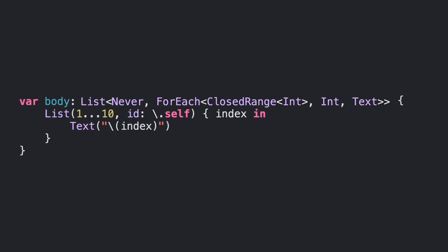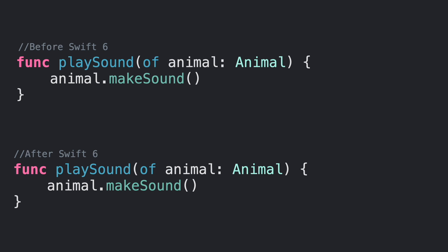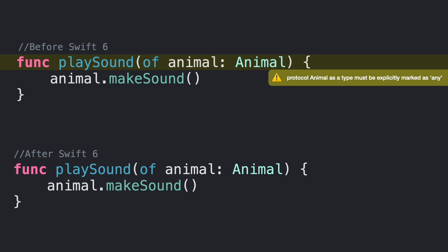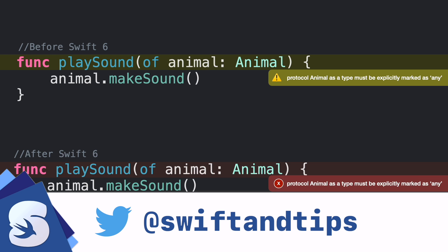You can read more about the 'some' keyword and opaque types via the link in the description and the card appearing on screen. This doesn't mean you shouldn't use existential types at all — there is no silver bullet in software development. However, the Swift community recommends minimizing the usage of existential types as much as possible and using generic constraints instead. The 'any' keyword is optional for Swift 5.6, will be marked as a warning if unused in coming versions, and will be marked as an error from Swift 6.0 and above. Start using it as soon as possible and be aware that this could break your legacy code in a coming version of Swift. If you want to learn more about generics and protocols, links are in the description below.